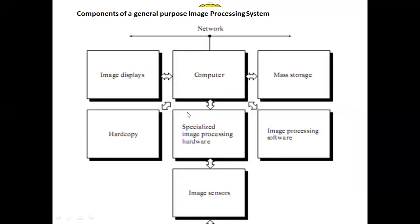This is the block diagram of the general image processing system. Here we are using a network to coordinate all the blocks. The components are image displays, computer, mass storage, hard copy, specialized image processing hardware, image processing software, and image sensors.